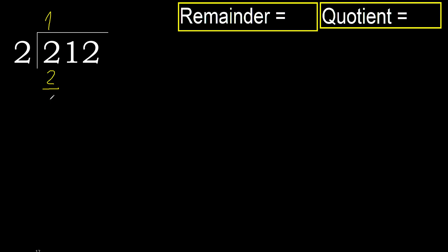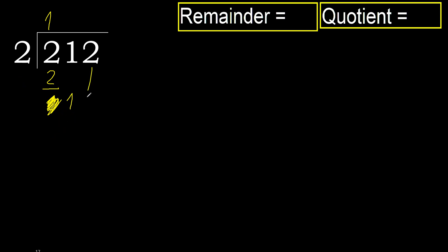Subtract. Next, eliminate 0 on this side. 1, but 1 is less, therefore next. 2 numbers, therefore here complete — always complete with 0, because here there are 2 numbers.